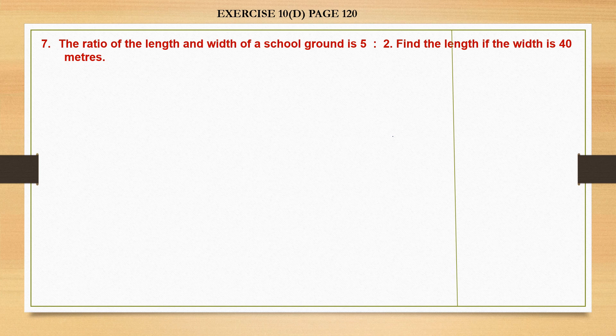The ratio of length and width of a school ground is given. The order is very important — ratio of length and width means this is length and this is width. Find the length if the width is 40 meters. So length is what we must find out and width is given to us.